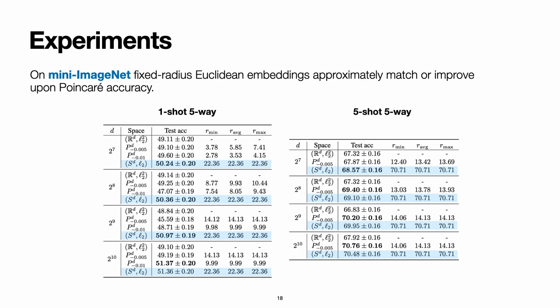In MiniImageNet, a similar phenomenon can be observed. In this case, the embedding radii of the hyperbolic representations is not constant for the smaller dimensions, but it converges to a common radius as the dimensionality increases.